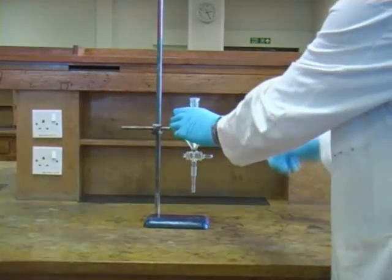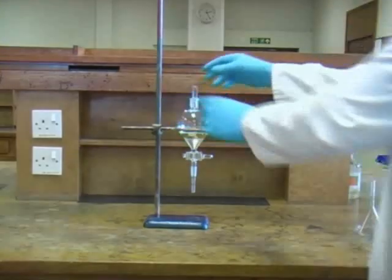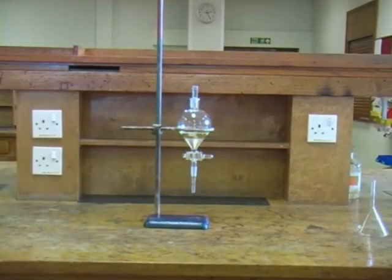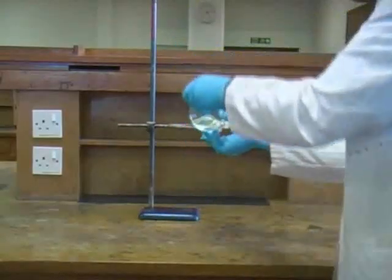Next you need to place a stopper in the neck of the separating funnel and you must ensure that you don't allow this to fall out at any point while you're handling the apparatus. Secure the stopper with one hand and carefully invert the separating funnel.